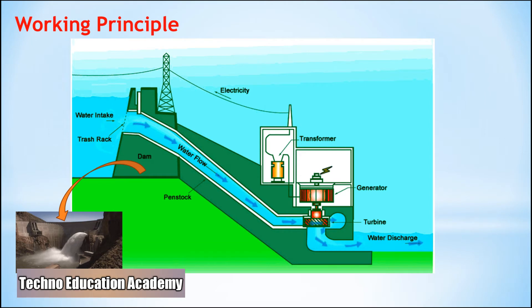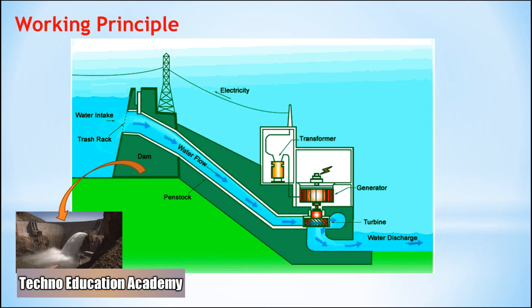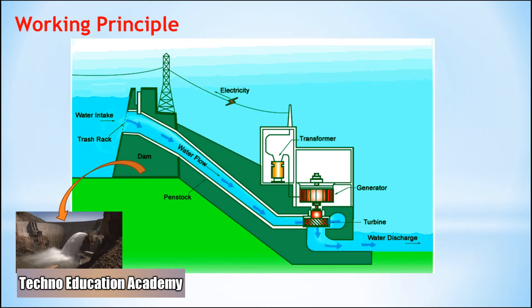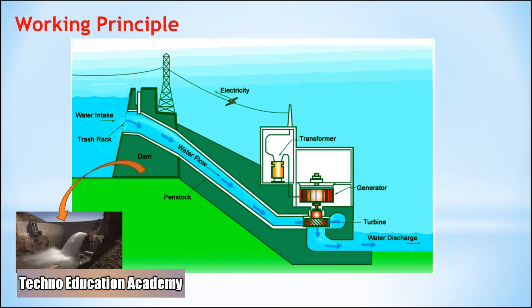At the bottom of the penstock, the fast-moving water spins the blades of a turbine. The turbine is connected to a generator to produce electricity. The electricity is then transferred via huge transmission lines to a local utility company, and can also be supplied for domestic usage.